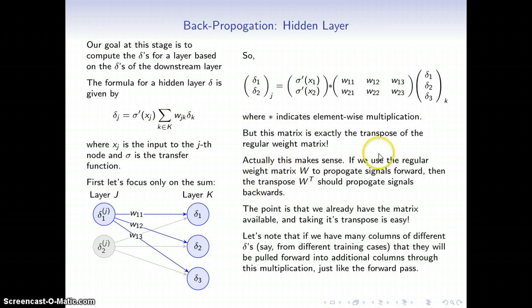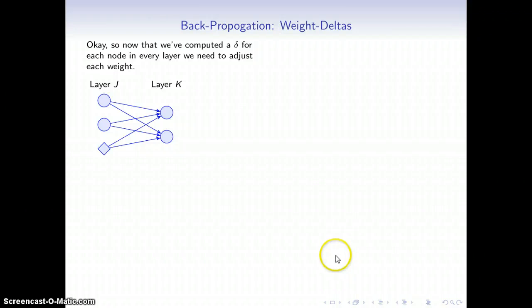When we have several inputs and several outputs, we'll have multiple columns of deltas right here. This part will still work as expected. We'll still get a list of deltas. The weight deltas will get a little more complicated, but we can talk about that later.